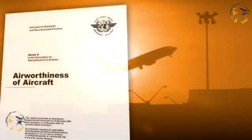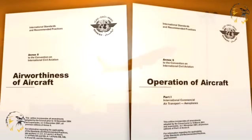You will now recall that the airworthiness standards of the Chicago Convention, Annex 8, are related to Annex 6, that deals with aeroplane performance. This realises that the operation of aeroplanes is intrinsically related to the safety of them, that is, the airworthiness of them.